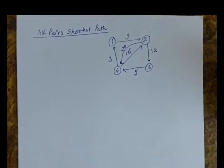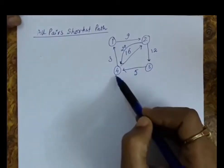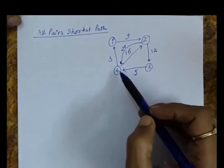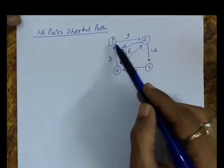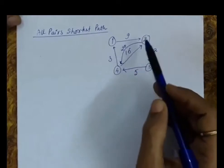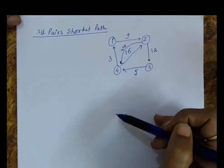We will discuss the all pairs shortest path in this lecture. The all pairs shortest path is about finding the shortest path between every pair of vertices. For example, if this is a network or graph and 1, 2, 3, 4 are representing stations, we are interested in finding the shortest path between 1 to 2, 2 to 1, 2 to 3, 3 to 2, 3 to 1, 1 to 3, similarly 4 to 2 and 2 to 4. That means we are interested in finding out all pairs shortest paths.